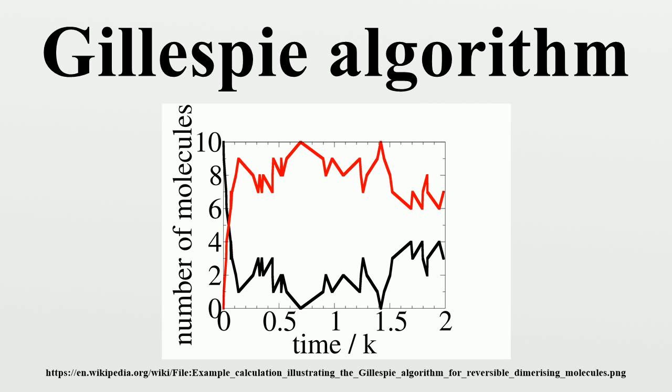Thus, we advance time from T to T plus delta T. The probability that this reaction is an A molecule binding to a B molecule is simply the fraction of total rate due to this type of reaction.